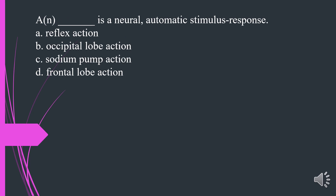What is a neural automatic stimulus response? A. Reflex action. B. Occipital lobe action. C. Sodium pump action. D. Frontal lobe action. The answer is A. Reflex action.